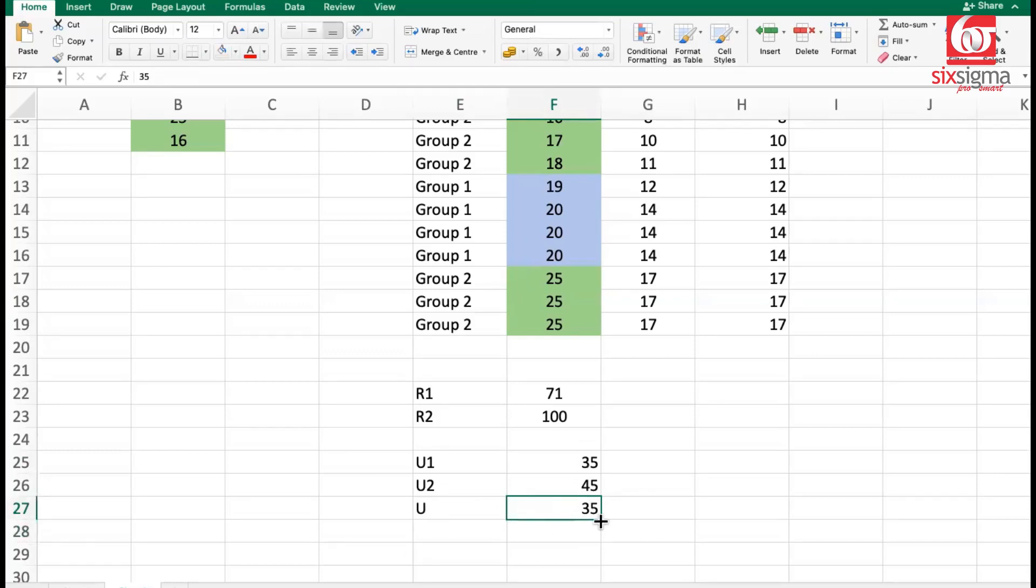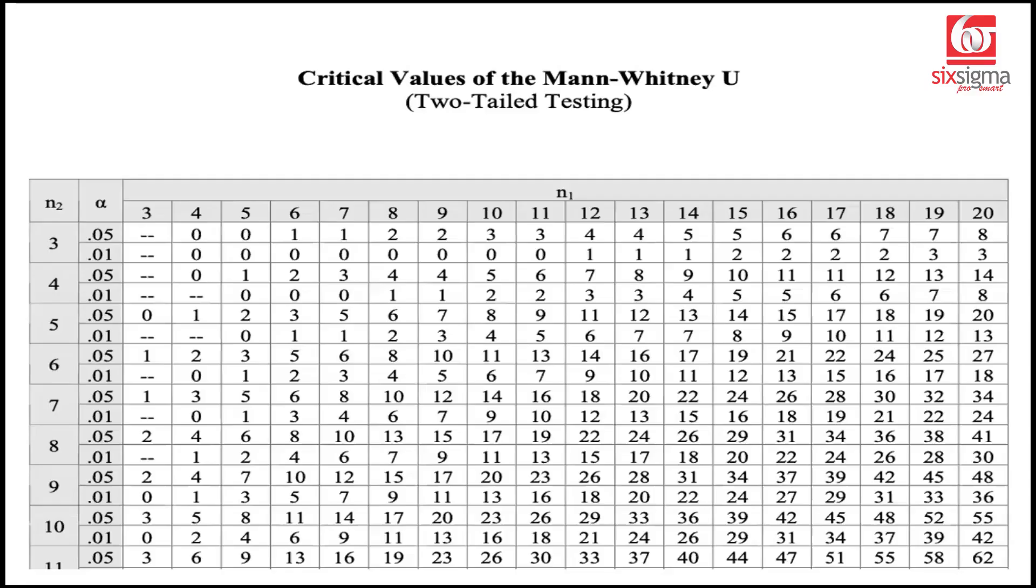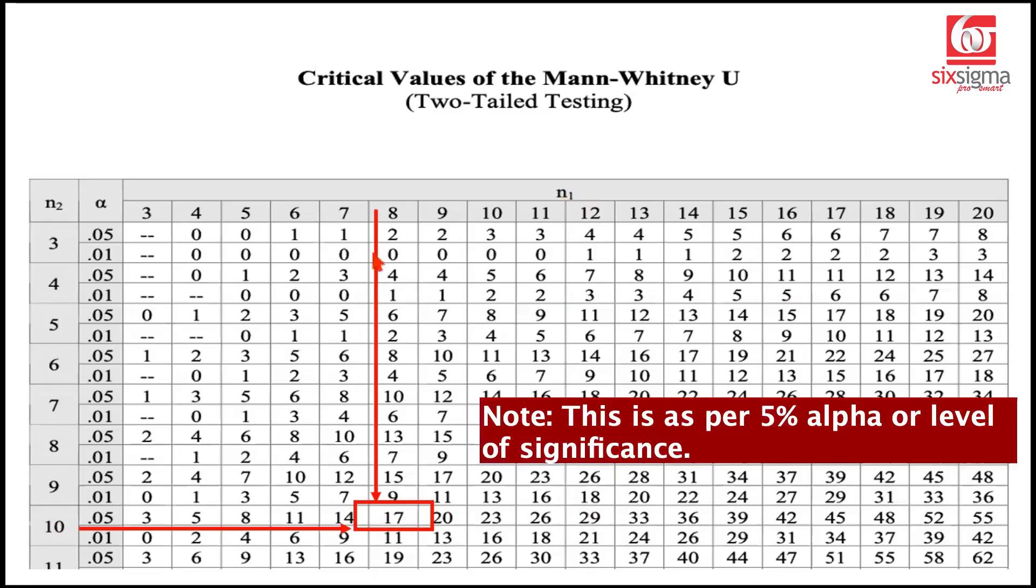Now that we found the test statistic, we can compare it with a critical value. Then using the decision rule, we can decide whether to reject or fail to reject the null hypothesis. This is the Mann-Whitney U table. You find it at the back of statistics books or easily online. There are separate tables for one-tail and two-tail tests. Since our problem is a two-tail test, that's what we're referring to. How do we read this? It's straightforward. You locate N1 and N2 values. In our case, N1 was 8 and N2 was 10. You locate where these two values meet. The critical U value is 17.